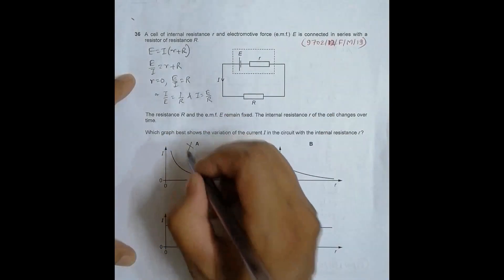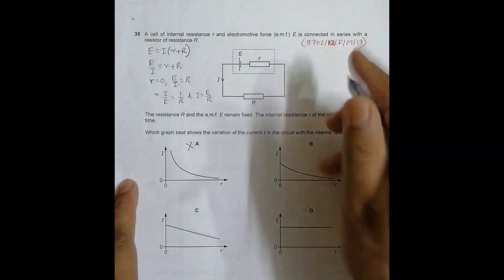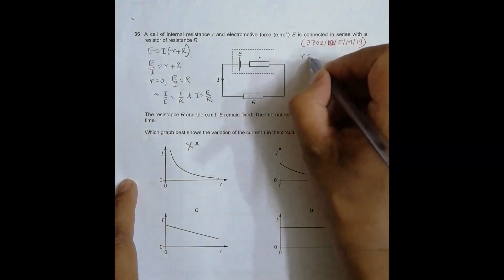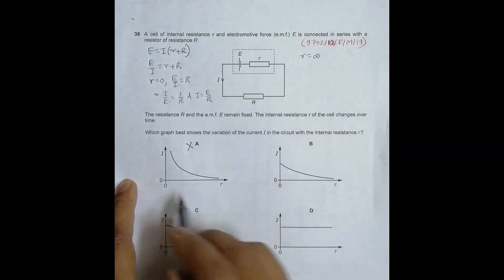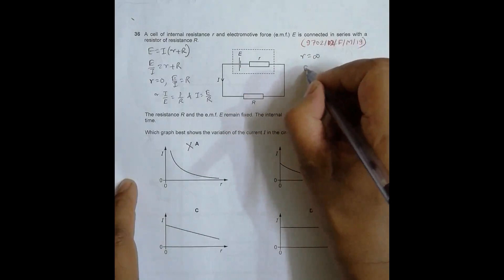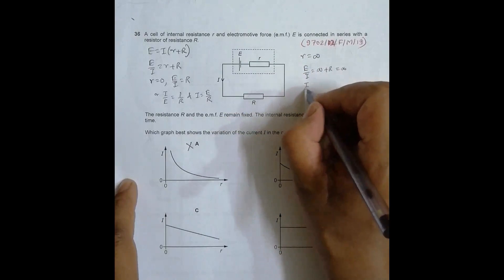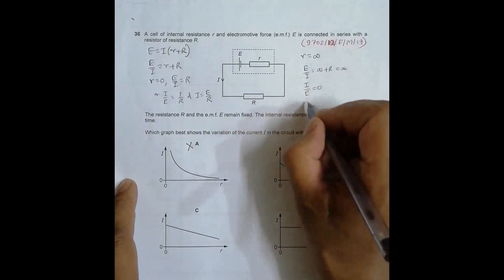Now when I have small r equal to infinity, when it goes like this, at that time I will have E/I is equal to infinity plus R, equal to infinity. So this gives me I/E equal to 0, or I is equal to 0.